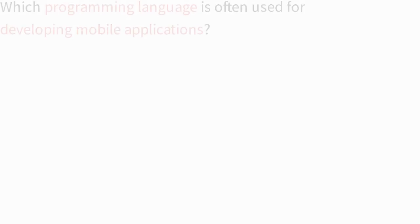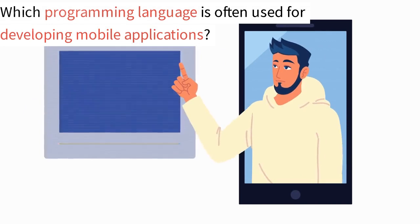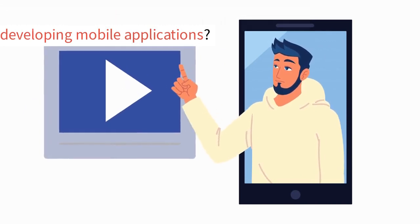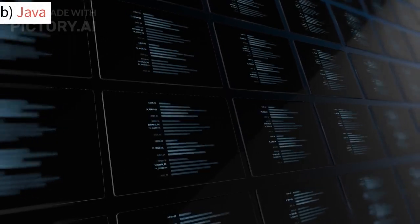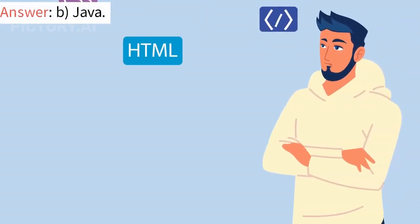Question 2. Which programming language is often used for developing mobile applications? A. Python. B. Java. C. C-Sharp. D. Ruby. Answer: B. Java.